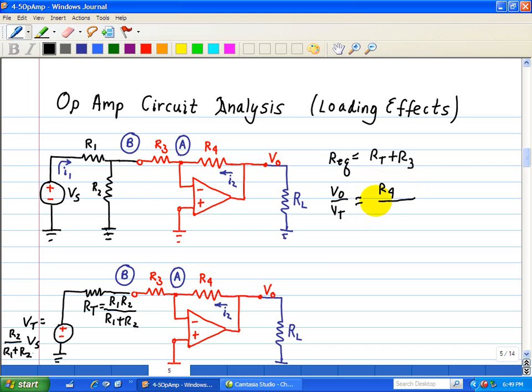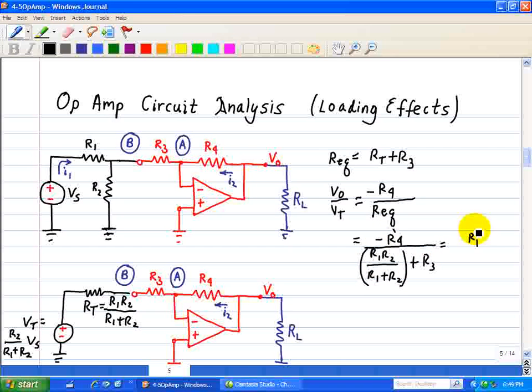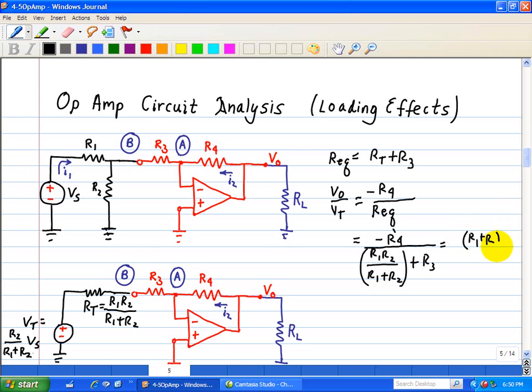All over R equivalent with a minus sign. So that's equal to, substituting R equivalent for Rt, we have R1, R2, all over R1 plus R2. This is in our denominator plus R3, all over negative R4. But that's equal to R4, but that's equal to R1 plus R2 times R4. There's a negative in here. And that's just R1 times R2 plus R3 times R1 plus R2 times R3, R3 times R2.